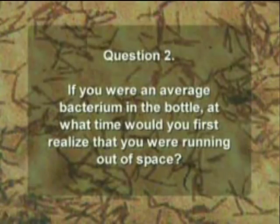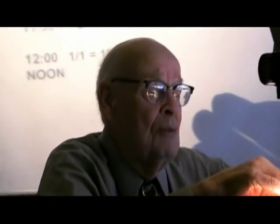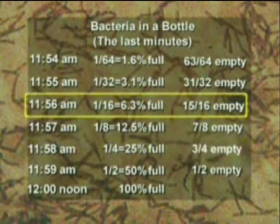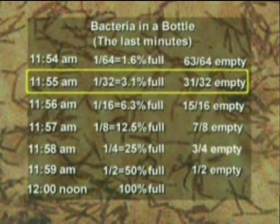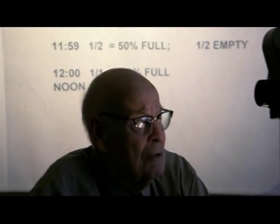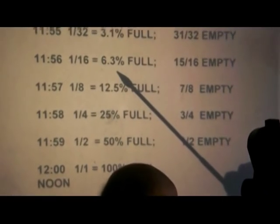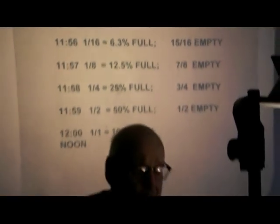Second question: if you were an average bacterium in that bottle, at what time would you first realize you were running out of space? Let's look at the last minutes. At twelve noon it's full; one minute before, it's half full; two minutes before, it's a quarter full; then an eighth and a sixteenth. At five minutes before twelve, when the bottle's only three percent full — ninety-seven percent open space just yearning for development — how many of you would realize there was a problem? In the controversy over growth in Boulder, someone wrote that there's no problem because 'we have fifteen times as much open space as we've already used.' What time was it in Boulder when open space was fifteen times the amount already used? Four minutes before twelve.